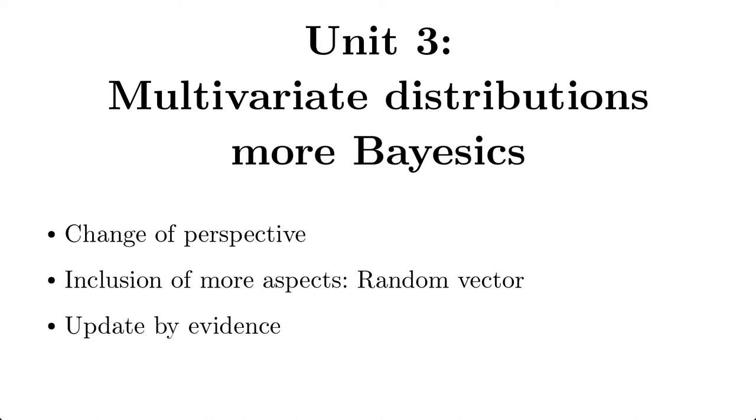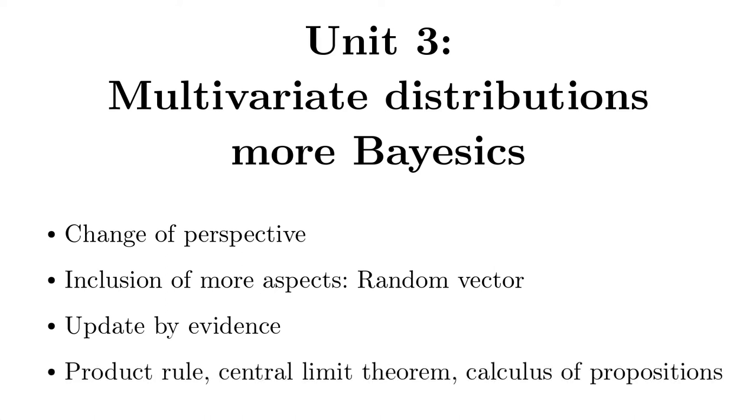The introduction of several random variables will seamlessly lead to the second fundamental rule in probability theory, the product rule. The question of Captain Bayes about the distribution of a sum of random variables will lead us to the central limit theorem. Finally, we will identify the rules of probability theory as the general calculus of propositions.